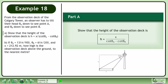From the observation deck of the Calgary Tower, an observer has to tilt their head theta A down to see point A and theta B down to see point B. In part A, show that the height of the observation deck is h equals x over cotangent theta A minus cotangent theta B.